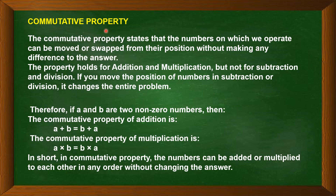The commutative property states that the numbers on which we operate can be moved or swapped from their position without making any difference to the answer. For example, 3 plus 4 equals 7, and 4 plus 3 also equals 7. So without changing the answer, we have changed the order of the numbers.